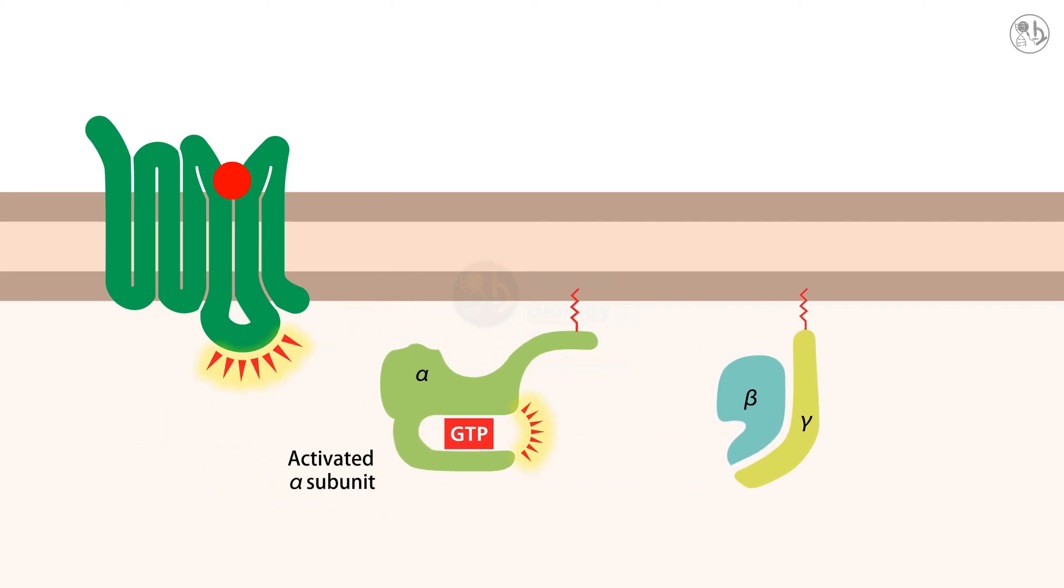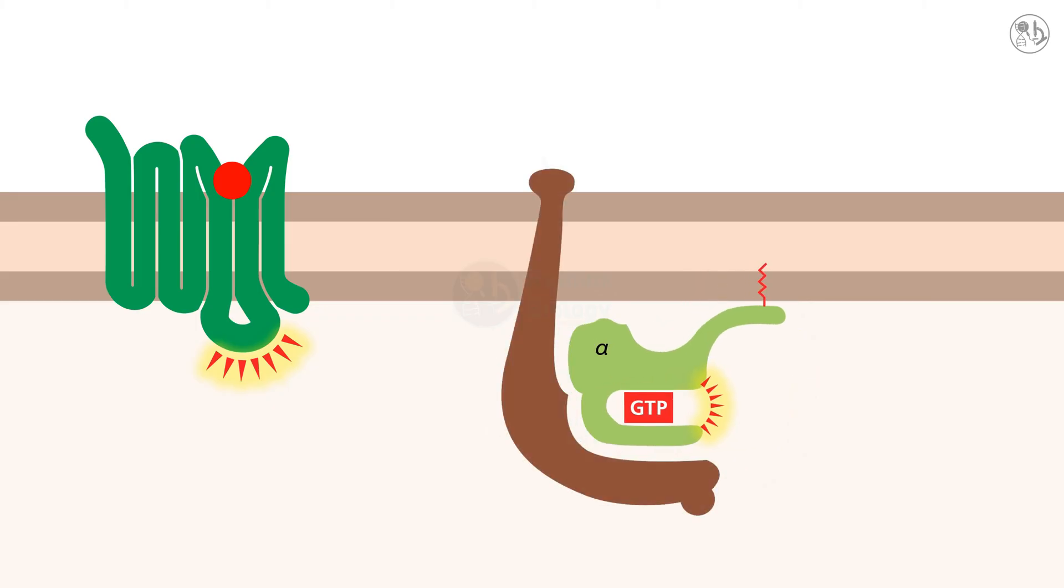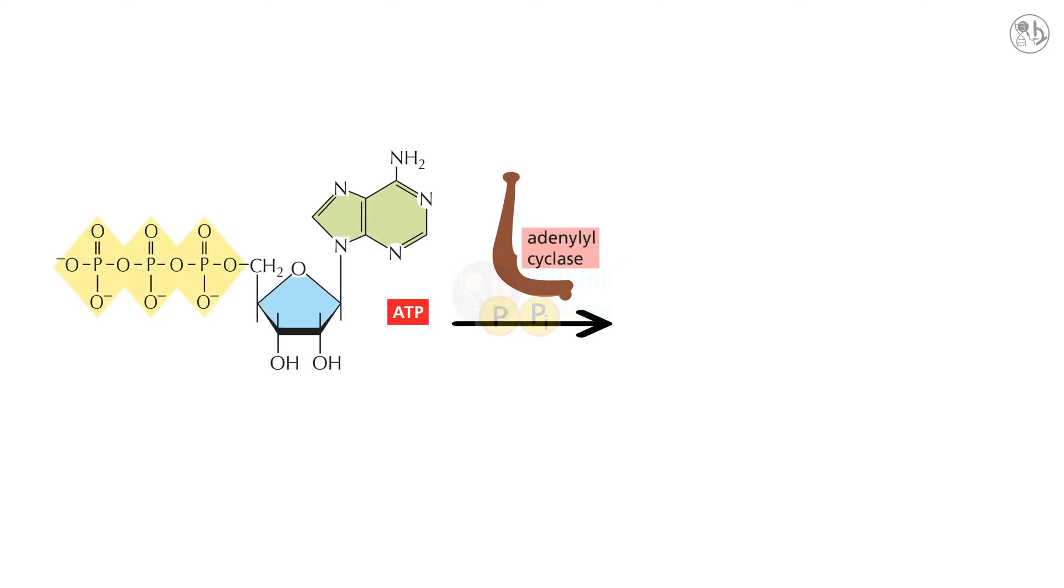The alpha subunit then binds to an enzyme called adenylyl cyclase which is embedded in the cell membrane. Adenylyl cyclase converts ATP, the energy currency of the cell, into CAMP. This increases the concentration of CAMP in the cytosol which triggers the next step in the signaling pathway.